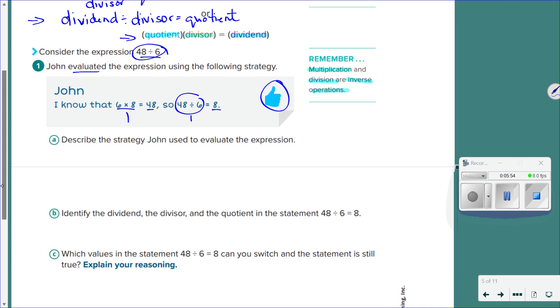So what strategy did John use to evaluate the expression? What do you think? Good. He used his fact family, right? And inverse operations. So he used the fact family and inverse operations.